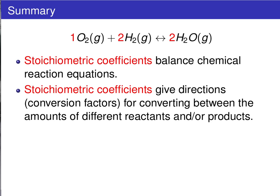First, we've seen that the stoichiometric coefficients are derived in the balancing of chemical reaction equations, and they are put in place to ensure that there are equal numbers of each atom type on the reactants and product side.